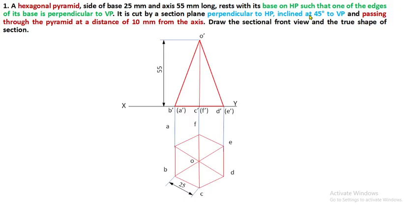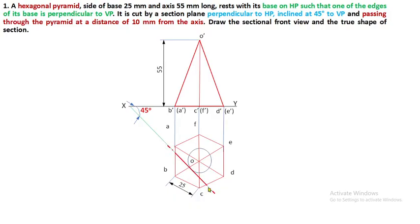Now we will move on to the section plane condition. The section plane is inclined at 45 degrees to VP and passes through the pyramid at a distance of 10 mm from the axis. Whenever this condition is given, draw a circle with a radius of 10 mm using O as center, and the 45 degree inclination line must be tangent to this circle. Convert to the section plane representation: continuous thick line with a small dash at both edges.